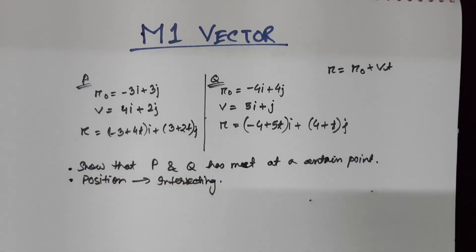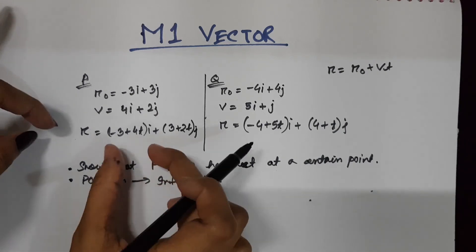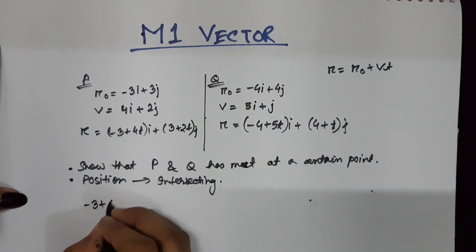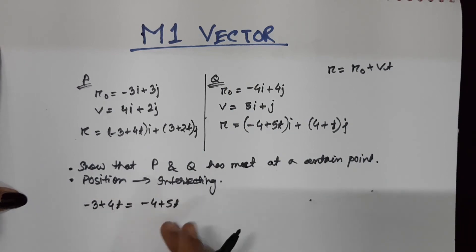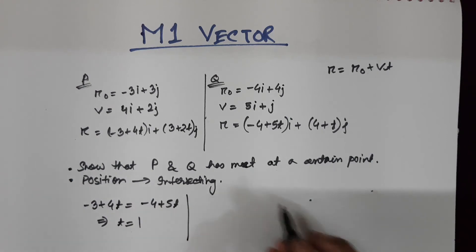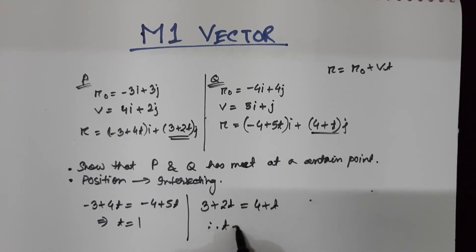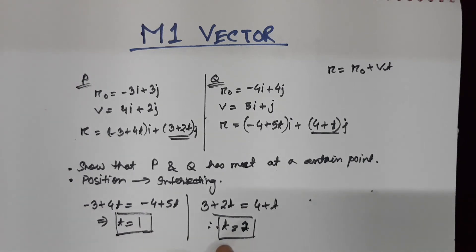To show that the two particles have met at a certain point, we find the time at which they meet. Equating the i-coordinates of P and Q and solving gives t = 1. Similarly, equating the j-coordinates gives 3 + 2t = 4 + t, which also gives t = 1. Since both the i-coordinate and j-coordinate equations yield the same value of time, it is confirmed that particles P and Q have met. If the two time values were different, it would not be proved that the particles met.